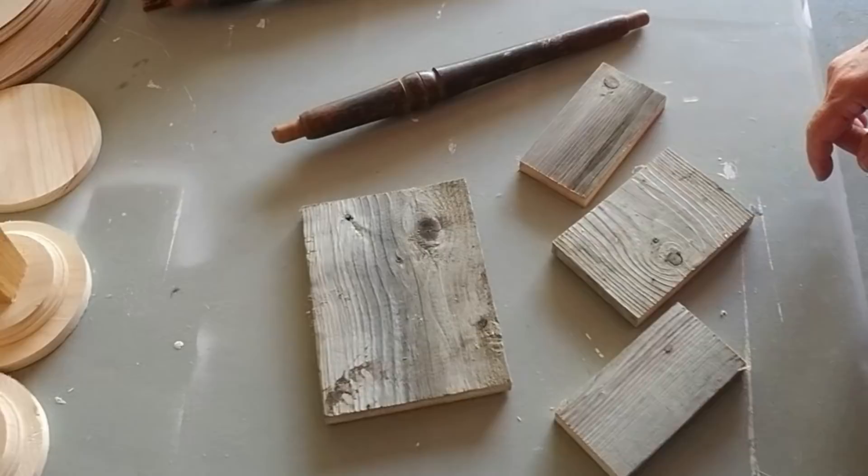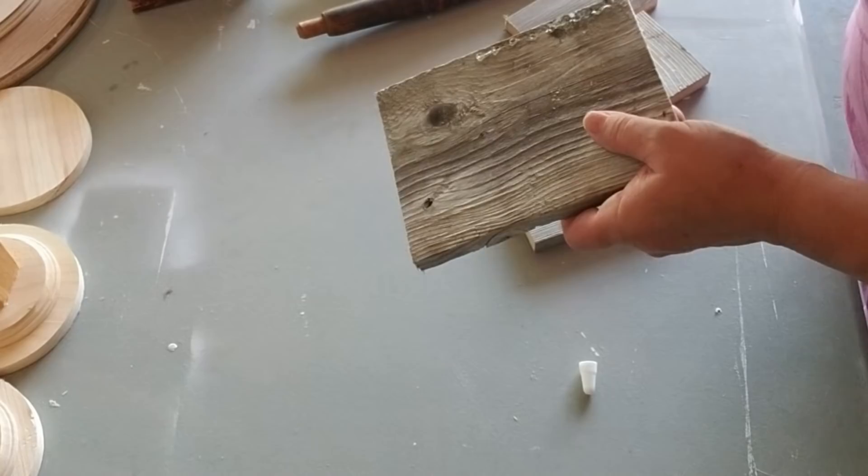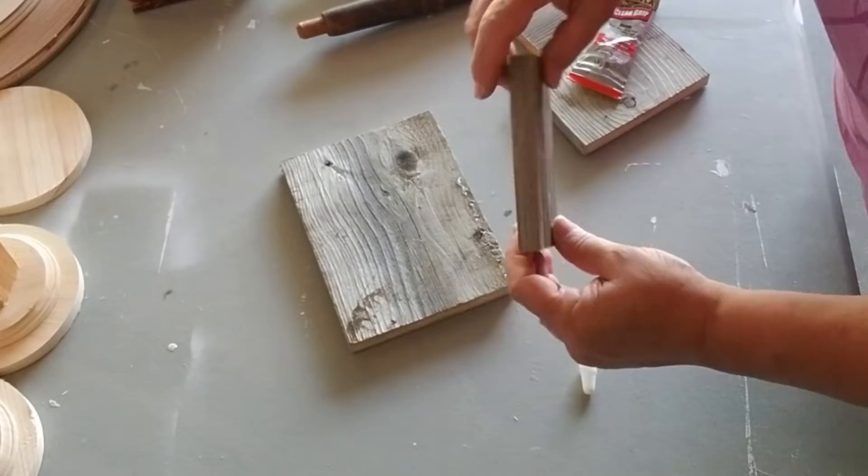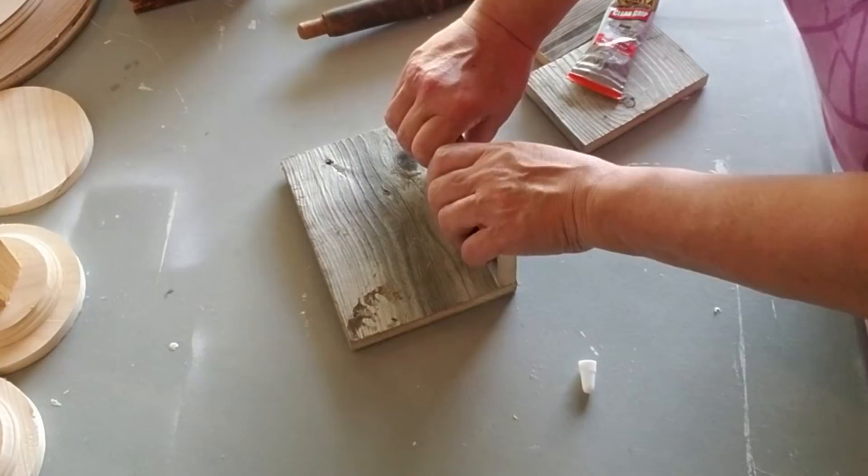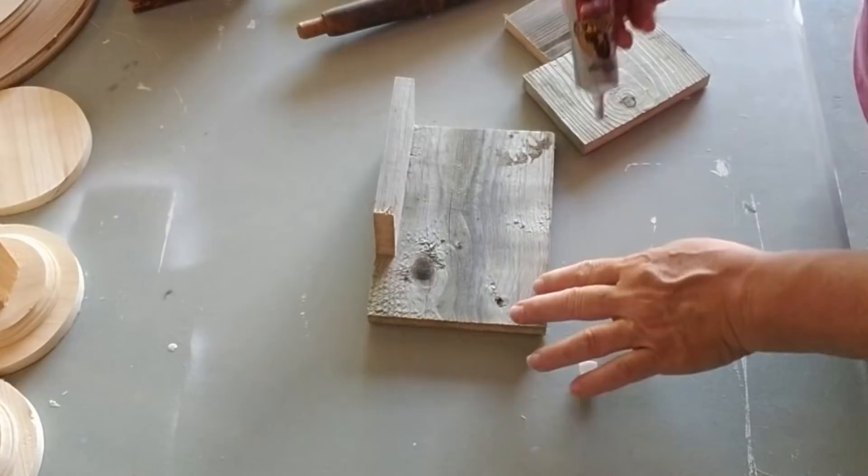This project is using some scrap pieces of wood. I actually only had to cut one of them, and those spindles you see now I'm not sure where they came from, they might have been from a table or a chair. I'm going to go ahead and glue all of these pieces together.